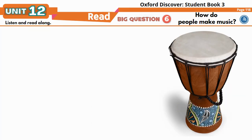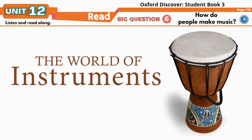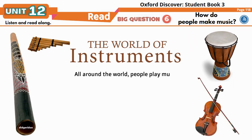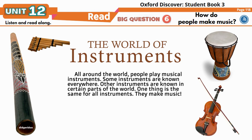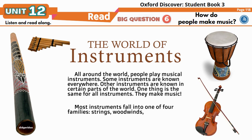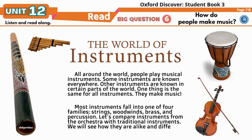Page 118: Read — The World of Instruments. All around the world, people play musical instruments. Some instruments are known everywhere; other instruments are known in certain parts of the world. One thing is the same for all instruments: they make music. Most instruments fall into one of four families: strings, woodwinds, brass, and percussion. Let's compare instruments from the orchestra with traditional instruments to see how they are alike and different.